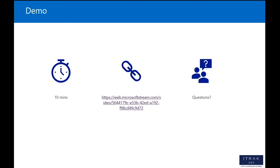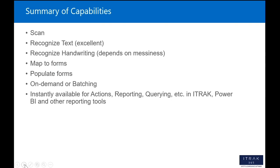That's a good question. If people have additional questions, now is a good time to ask. Essentially, what you saw can be summarized as: the system has the ability to scan and recognize text — which is quite good at handwriting depending on the messiness — map to forms, populate those forms, and create on-demand or batch solutions. Once that data is captured, it's instantly available for reporting, querying, Power BI data, or sending elsewhere, giving you on-demand live information.